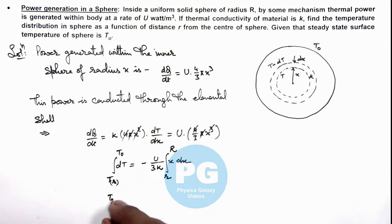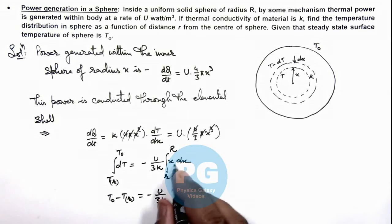T₀ minus T as a function of r is equal to minus U/3k, multiplied by its integration x²/2. So on substituting this value it gives us R² minus r²/2.